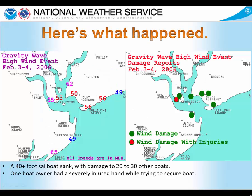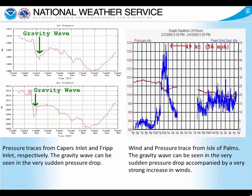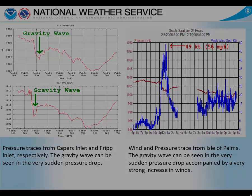Here's what happened that night. We had a gravity wave with very high winds in the immediate Charleston area, especially along the coast, where we had gusts as high as 65 miles per hour. We had a 40-foot sailboat sink with damage to 20 to 30 other boats, and unfortunately one boat owner had a severely injured hand. Here are the pressure traces from both the Capers Inlet and Fripp Inlet buoys, showing the very sharp drop in pressure marked by the gravity wave. Also notice on the right side the plot from Isle of Palms, showing the pressure drop and the dramatic increase in winds associated with the gravity wave.